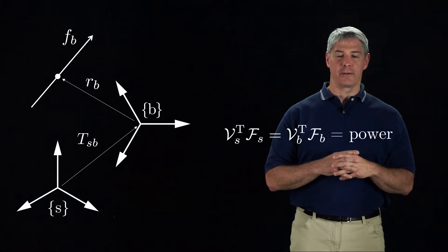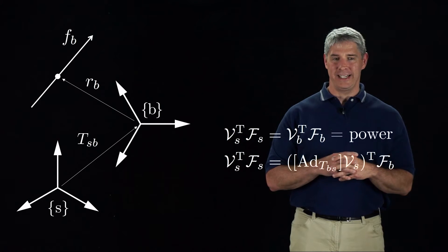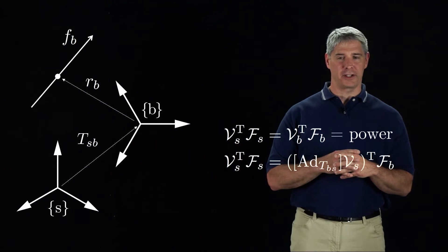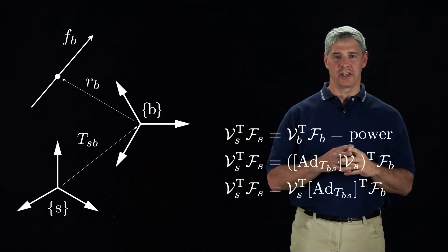Using our rule to change the frame of representation of a twist, we can express VB in terms of TSB and VS. Since the transpose of the product of a matrix and a vector is equal to the product of the vector transposed and the matrix transposed, we can rewrite the equation as shown here.